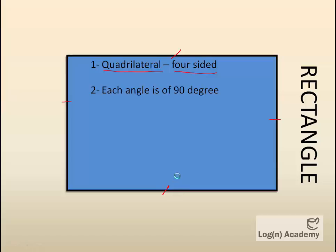The next property is that each interior angle is 90 degrees. You can see that this angle is 90 degrees, and this one is also 90 degrees. These two lines form 90 degrees, and these two lines also form 90 degrees.